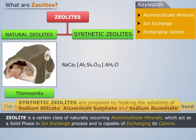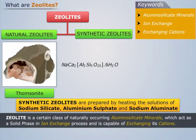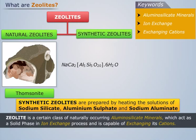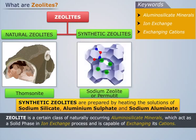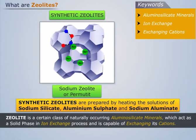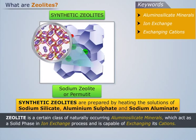Synthetic zeolites are prepared by heating solutions of sodium silicate, aluminium sulfate and sodium aluminate. One of the most common synthetic zeolites is sodium zeolite, or permidate, which is a white colored substance prepared from feldspar, kaolin, clay and soda.